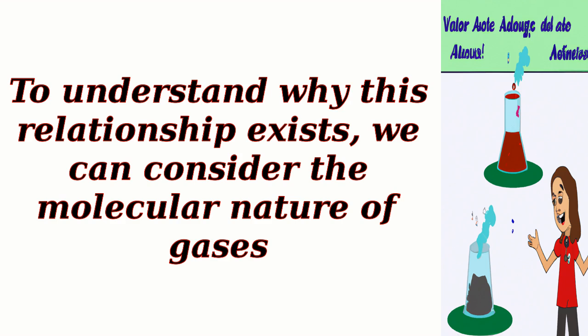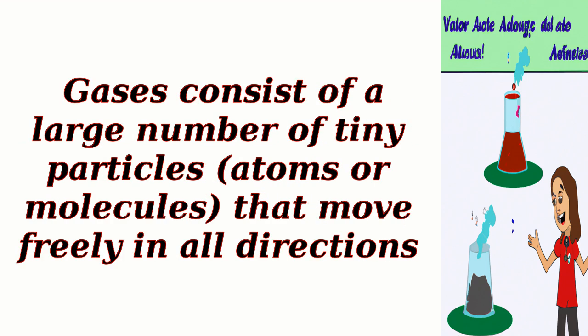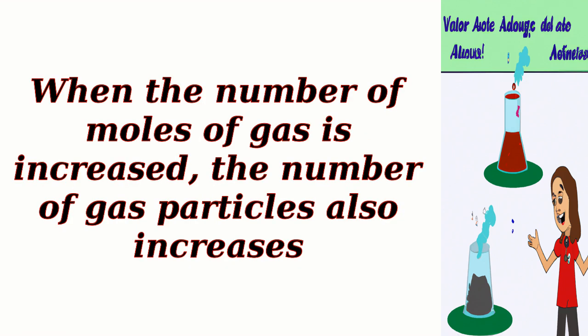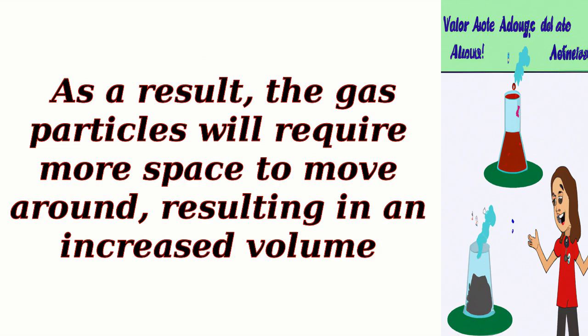To understand why this relationship exists, we can consider the molecular nature of gases. Gases consist of a large number of tiny particles — atoms or molecules — that move freely in all directions. These particles occupy a certain amount of space, which can be approximated as negligible in the case of an ideal gas. When the number of moles of gas is increased, the number of gas particles also increases, and as a result, the gas particles will require more space to move around, resulting in an increased volume.